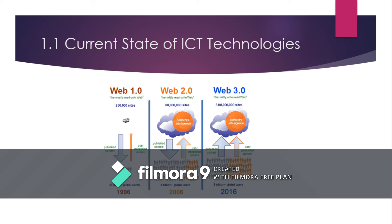Web 1.0 was mostly a read-only web — very few sites were published and visible to others. Back in 1996, there were 45 million global users. Web 2.0 grew to 80,000 sites on Yahoo, Bing, Opera Mini, and Google, with many users generating content around 2006. Web 3.0 is called the widely read-write web — everything you search for is automatically available, including samples for thesis or how to make robotics. That is the use of the three timelines of the World Wide Web.